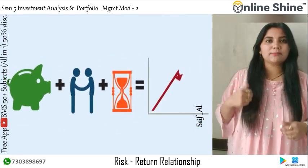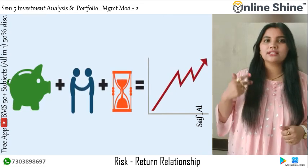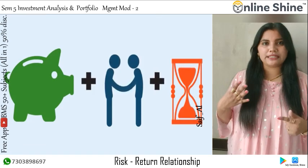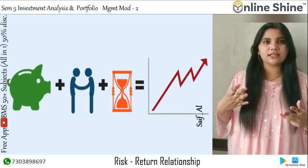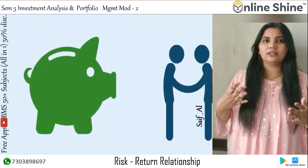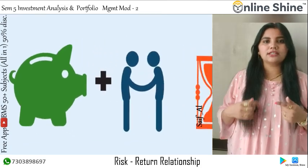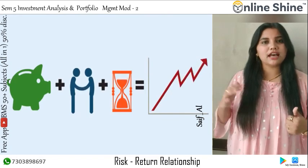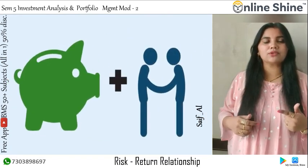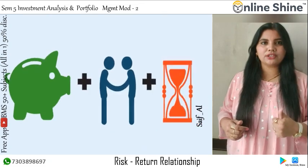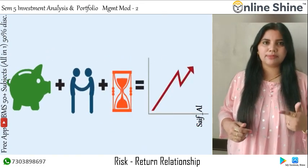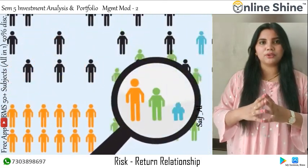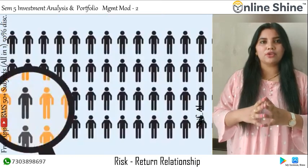Module 2 covers many types of risks — systematic and unsystematic risks in detail, measurement of beta, standard deviation, and variance. The next topic is Reduction of Risk through Diversification, and there are also practical problems on calculation of standard deviation, variance, and beta. These are all the topics covered in Module 2 of Investment Analysis and Portfolio Management.